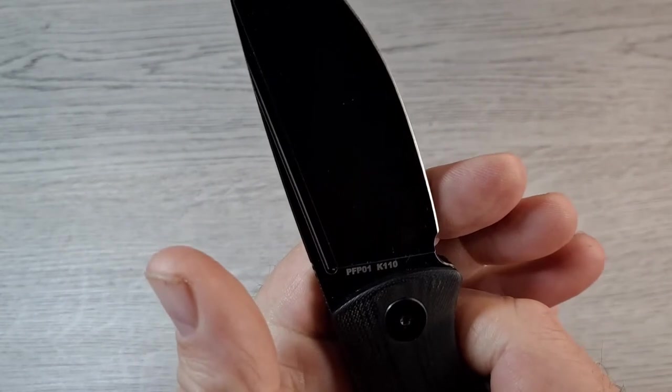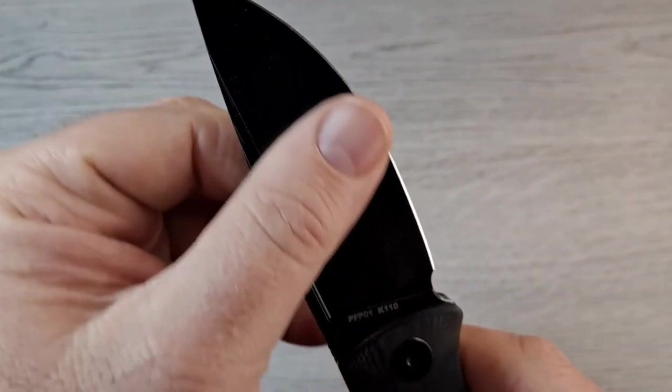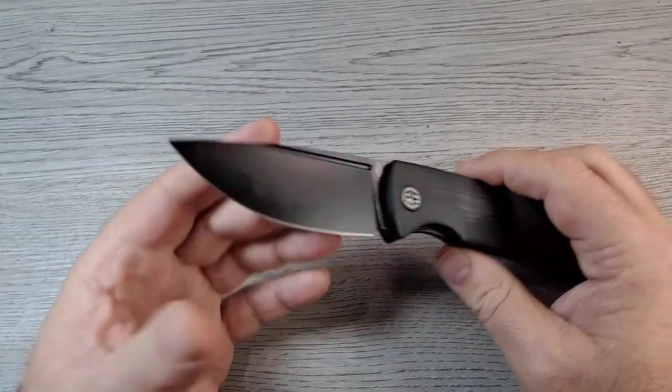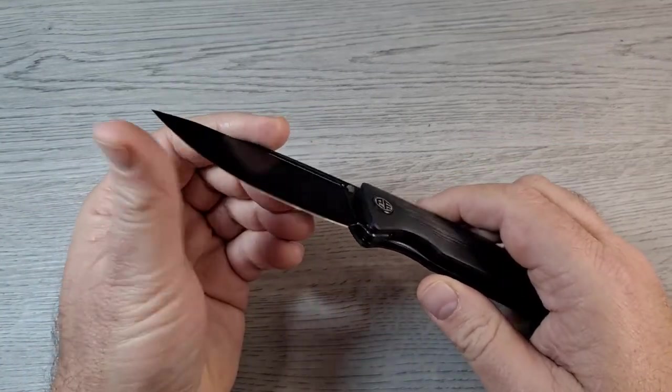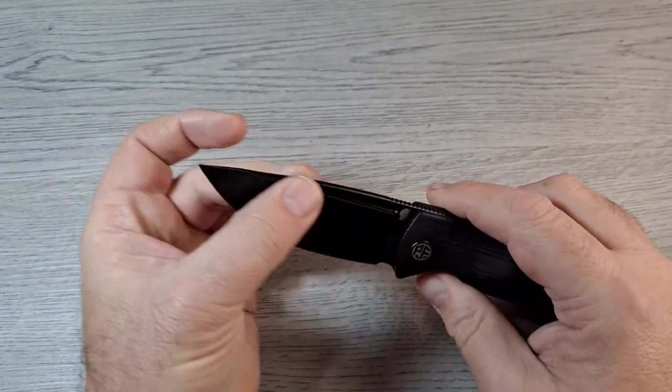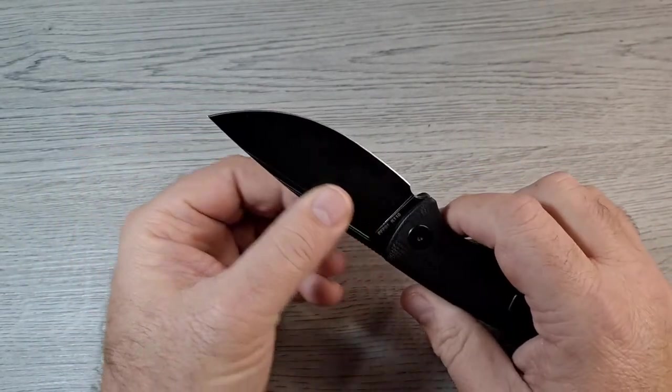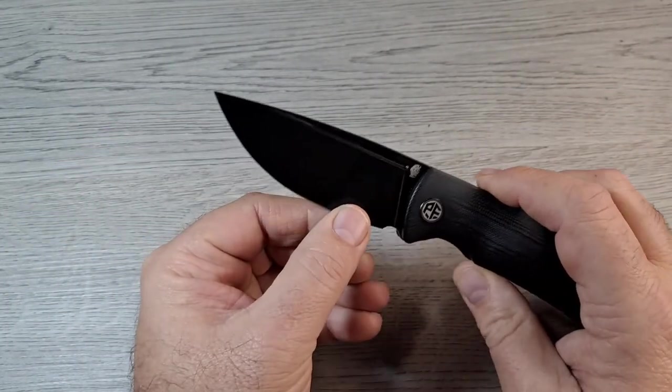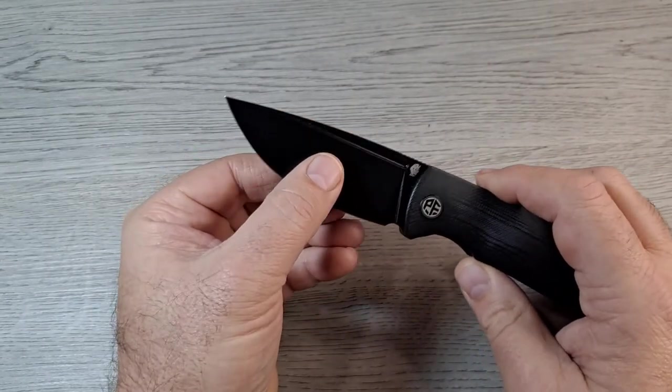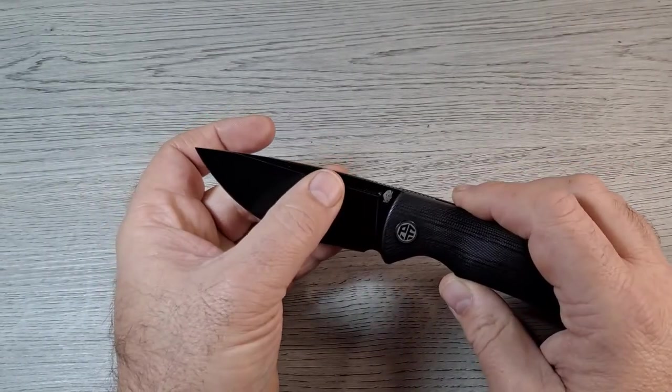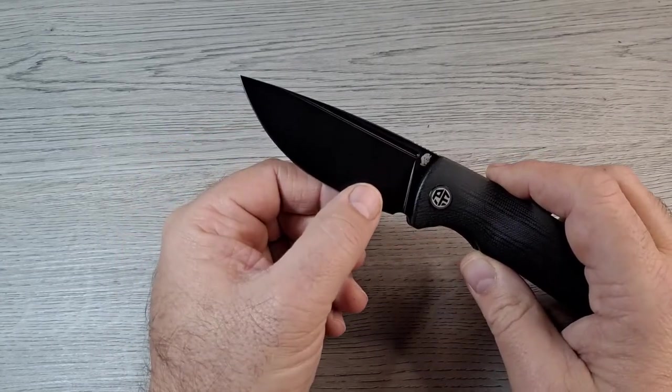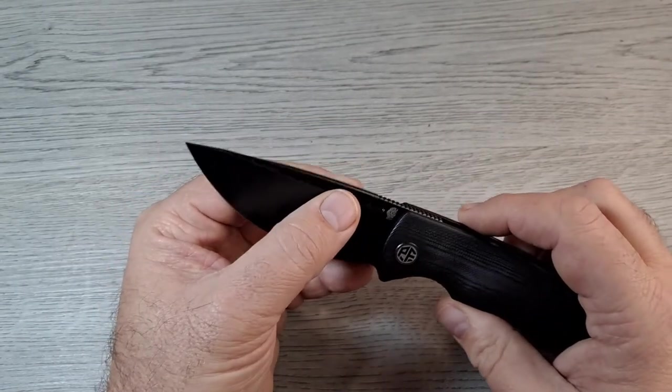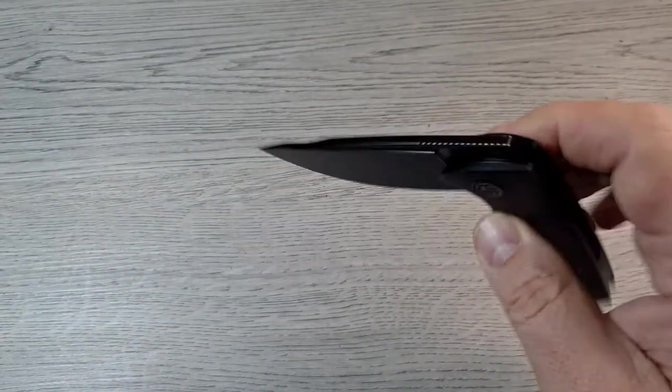This side says PFP01 and it's K110 steel. I've never dealt with K110 steel. Supposedly it's a lot like D2, not really corrosion resistant but very close to stainless. Let me tell you, it's an awesome flat grind that is very, very sharp.